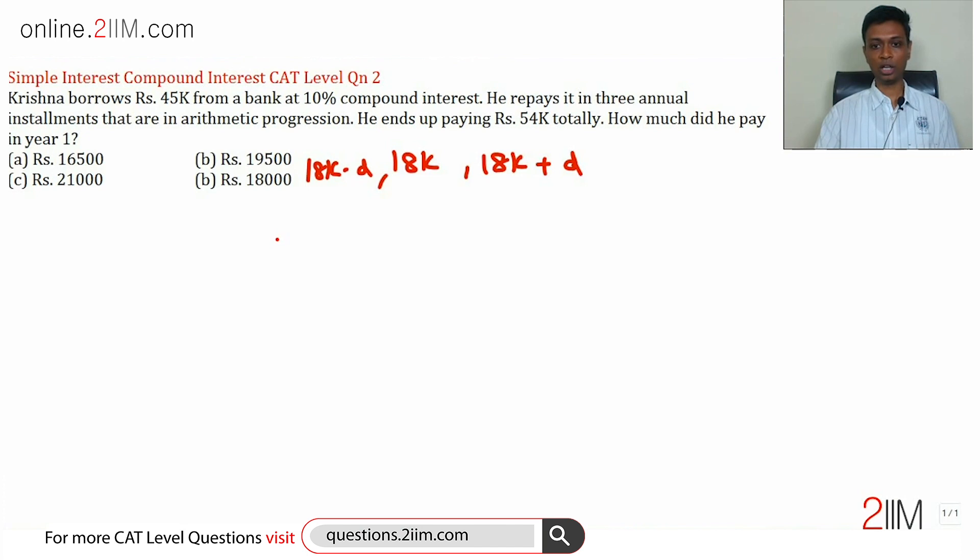So he pays 18,000 minus D at the end of year one, 18,000 at the end of year two, and 18,000 plus D at the end of year three. Three terms in AP adding up to 54,000.